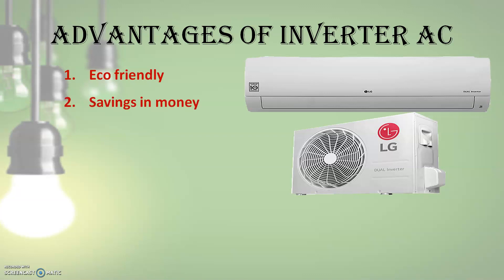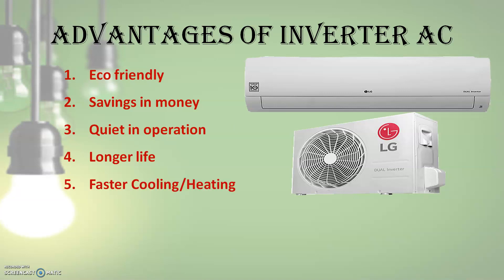Second, savings in money — the compressor does not work at full capacity all the time in an inverter AC. When the speed is lower, the needed energy is lower too, so you pay less for electricity. Third, quiet operation — the compressor motor does not turn on and off repeatedly but keeps working at lower power, making operation more quiet. Fourth, longer life — inverter technology makes the AC's life longer.